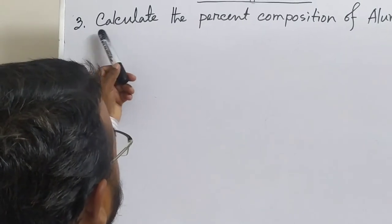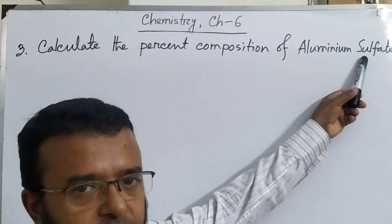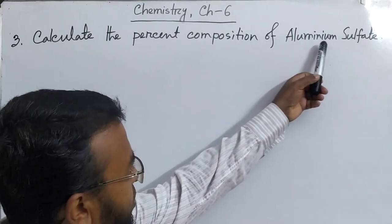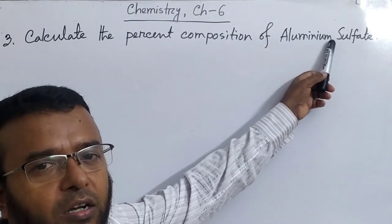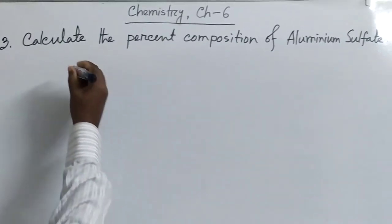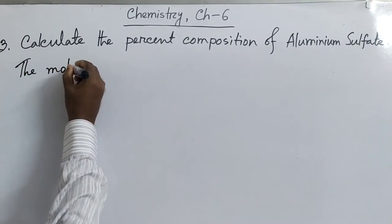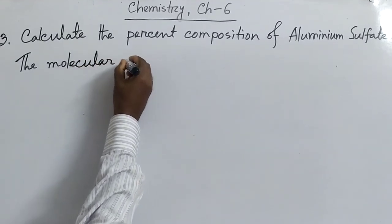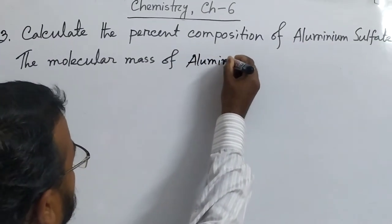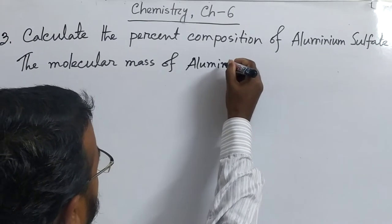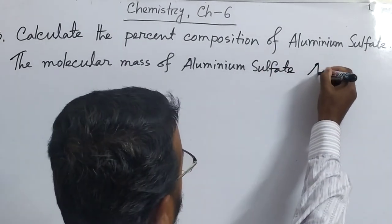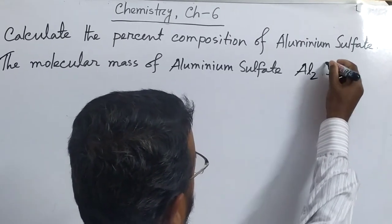Question number 3: calculate the percent composition of aluminum sulfate. This type of question I have solved in a previous class. Now, we have to know the formula of aluminum sulfate, then find out its molecular mass. The formula of aluminum sulfate is Al2(SO4)3.